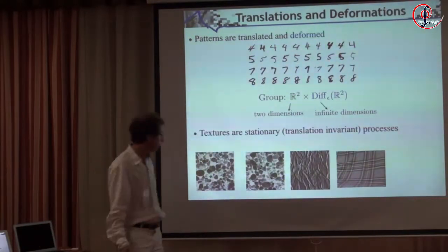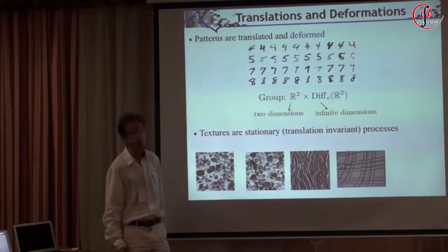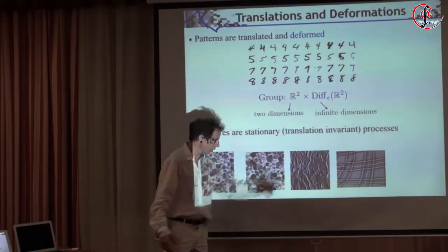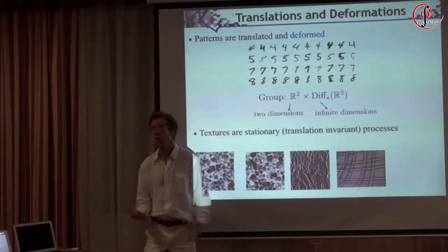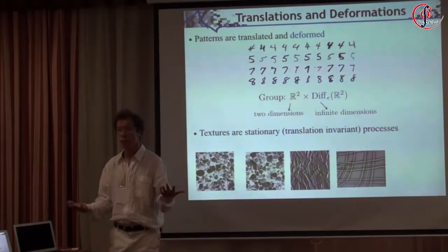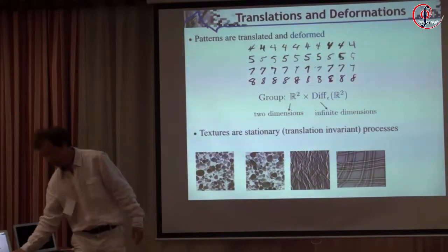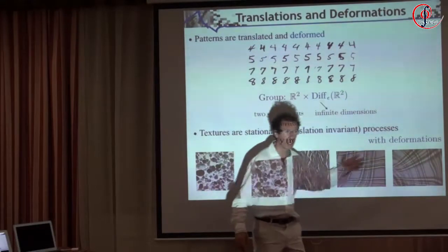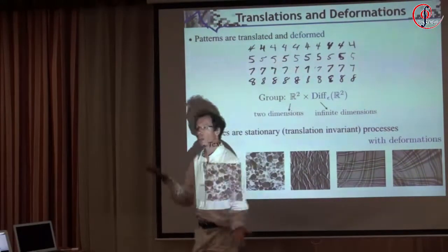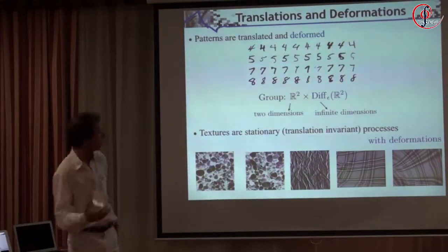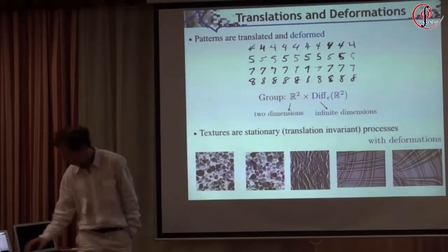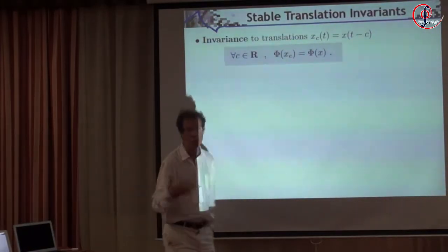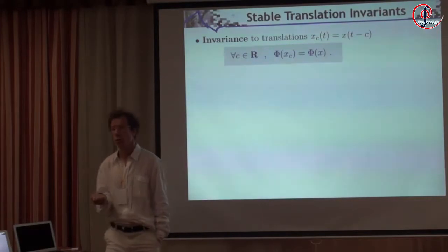The stochastic equivalent is that if you have a random process which is invariant to translation, you have a stationary process — that's the application to texture recognition. But the difficulty is that when you look at such processes, they are deformed because of perspective effects. You also want to be stable to deformation in order to recognize that two textures, although deformed with respect to each other, are realizations from similar processes.